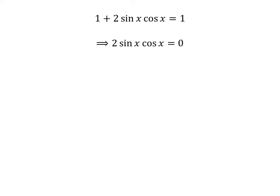Cancelling out the 1 on both sides gives us 2 times sin of x times cosine of x is equal to 0. We know the trigonometry identity: sin of 2x is equal to 2 times sin of x times cosine of x. The proof of this identity is explained in the video appearing in the upper right corner. The link is also given in the description. So, application of this identity gives us sin of 2x is equal to 0.